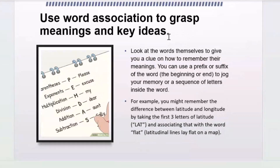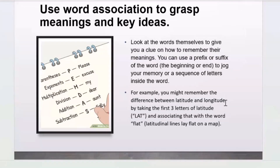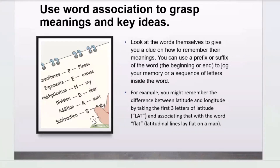Create acronyms to help memorize key terms — take the first letters and organize them into a word you can remember. For example, the three branches of government: Legislative, Executive, Judiciary — LEG. Picture a government executive carrying a ledger. The third strategy is word association: use prefixes or suffixes to jog your memory. For example, remember the difference between latitude and longitude by associating 'lat' with 'flat' — latitudinal lines lay flat on a map.